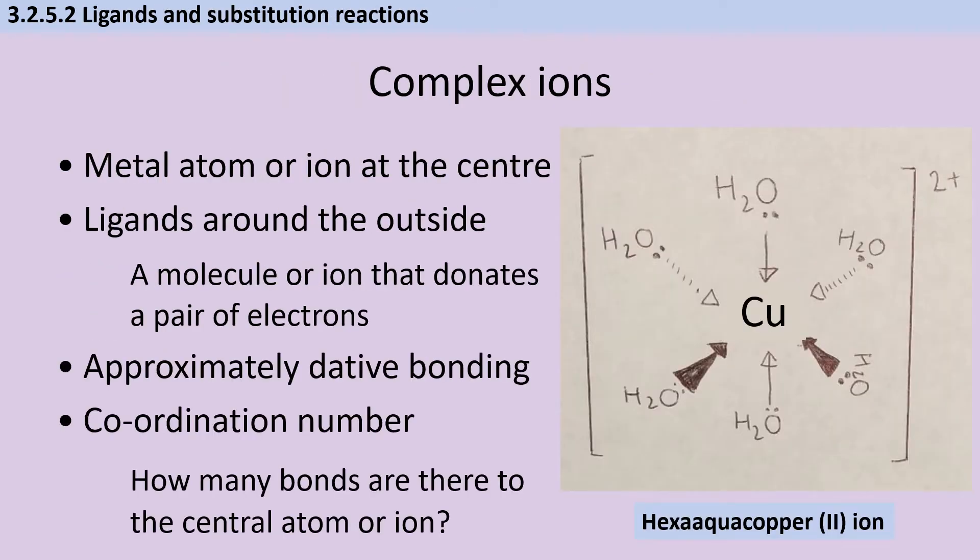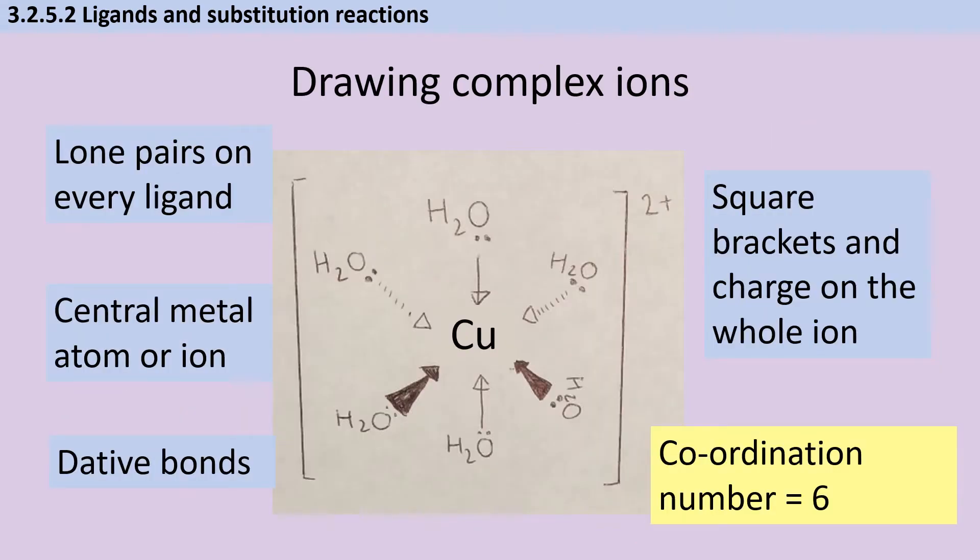A complex ion contains a central metal atom or ion surrounded by a number of ligands. These are molecules or anions that donate a lone pair of electrons, equivalent to a dative bond. We can describe the number of bonds in terms of the coordination number. Note this is the number of bonds formed, not the number of ligands, as some ligands can make more than one bond. When you draw the complex ion, ensure the lone pair bonding from each ligand is visible. Arrows go towards the central metal species. The square brackets demonstrate the charge applies to the whole ion. This hexa aqua copper 2+ ion has a coordination number of six.